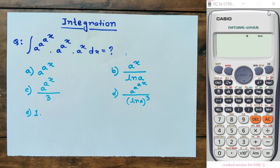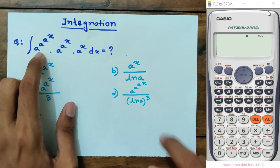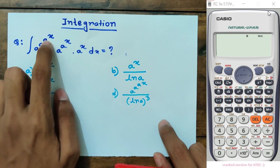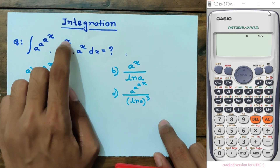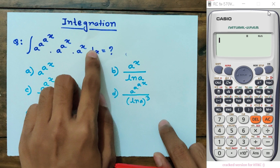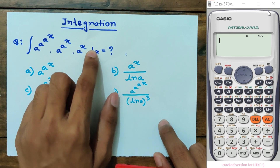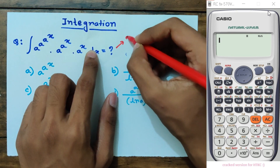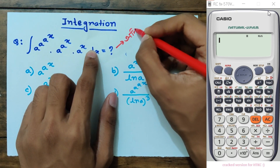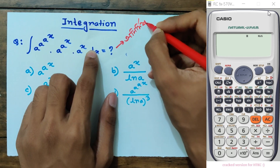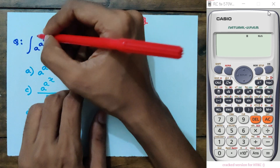So this is the math. The math is very interesting because the math is a to the power x, a to the power x, then dx star value. So this is the math.